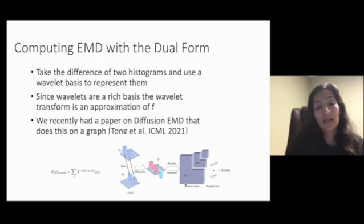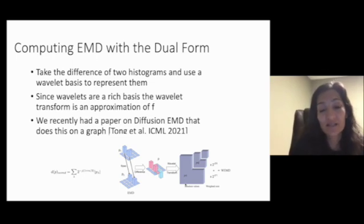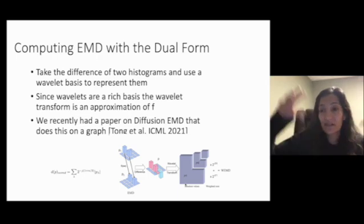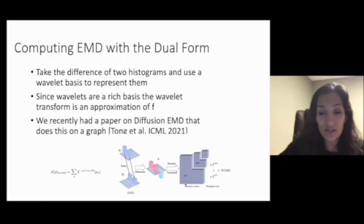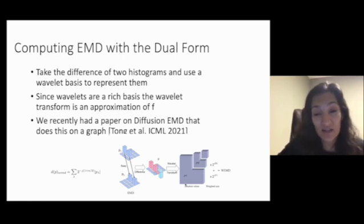We recently had a paper on this kind of idea called diffusion EMD. Diffusion EMD takes histograms at different scales of resolution, and it does the histograms on a graph by using graph diffusion-based kernel density estimation. Then it takes the difference of these multi-scale histograms with each other. This gives you an earth mover's distance.